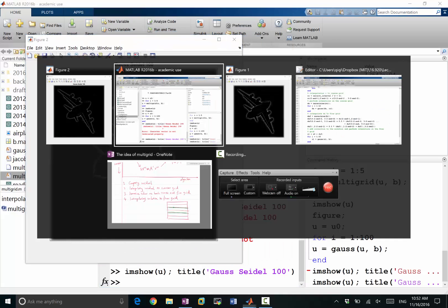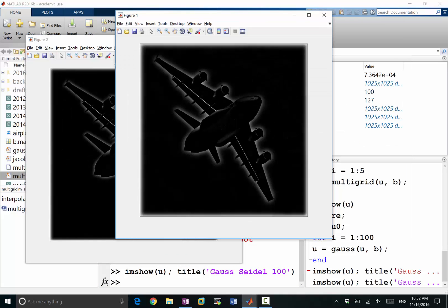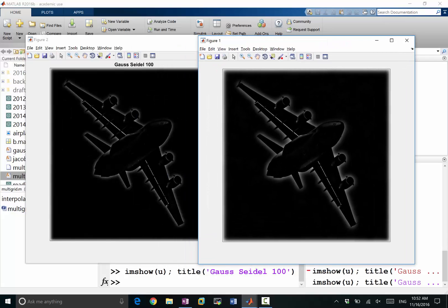So this is Gauss-Seidel after 100 iterations, this is my multigrid after 5 iterations which includes 50 coarse-grid iterations and 50 fine-grid iterations. Do you see some difference or not? Yes, so the Gauss-Seidel iterations looks very, only has very fine lines, and the multigrid has a lot more smoothness, has a lot more lower frequency content in it.